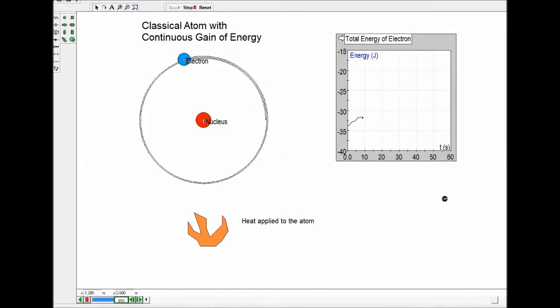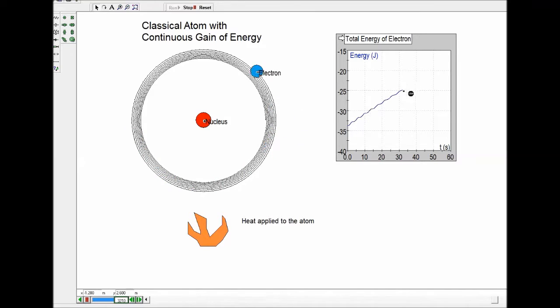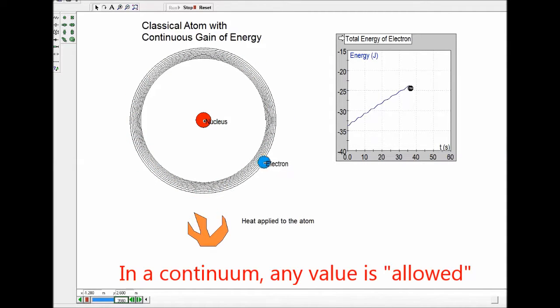In the classical models, there are no defined energy levels. So you can see as we're adding heat, the electron's orbit is expanding with each revolution. The electron's energy is gradually increasing. This atom is not bound by any quantum considerations. Any energy is possible, so there's a continuum of energies.